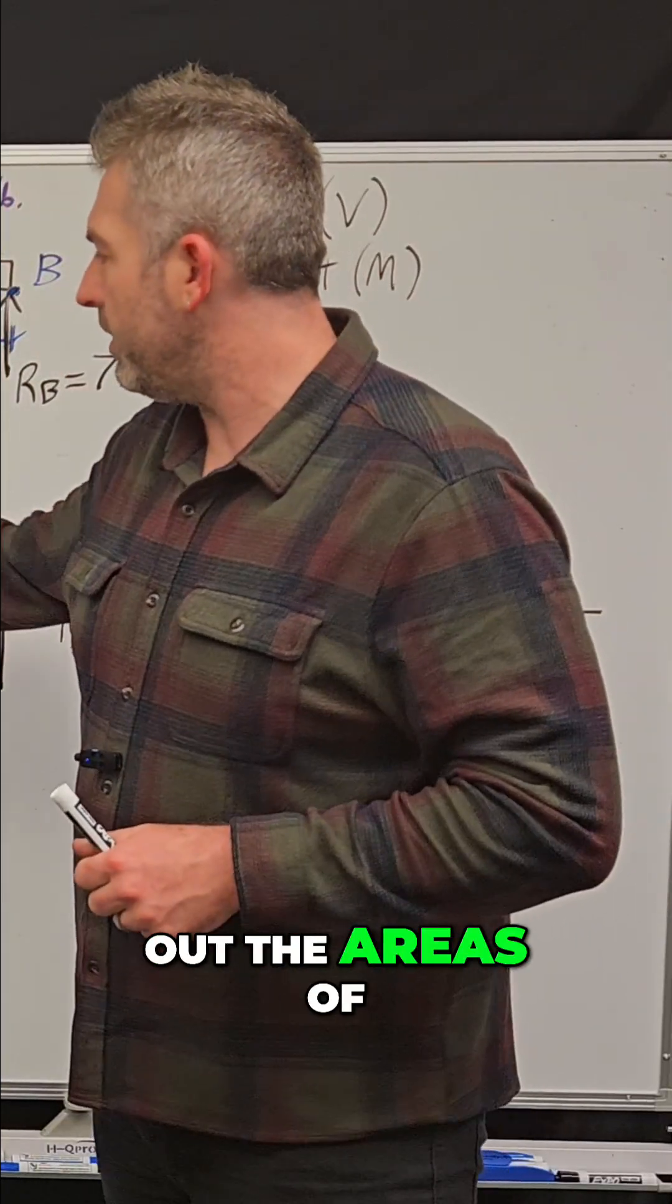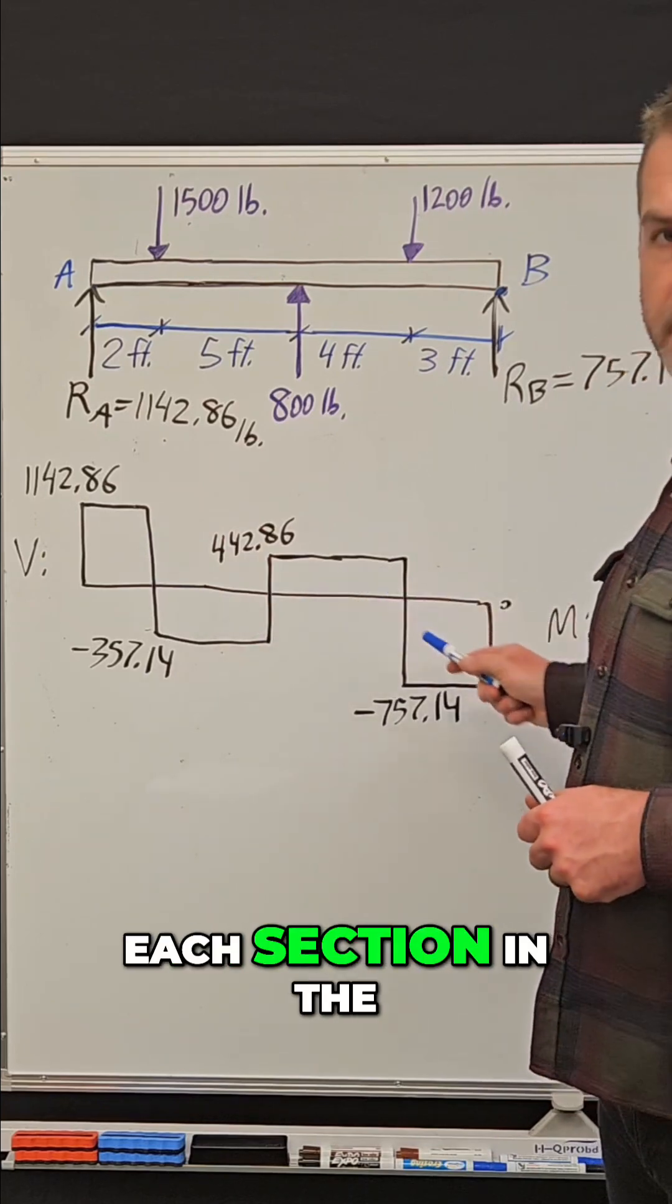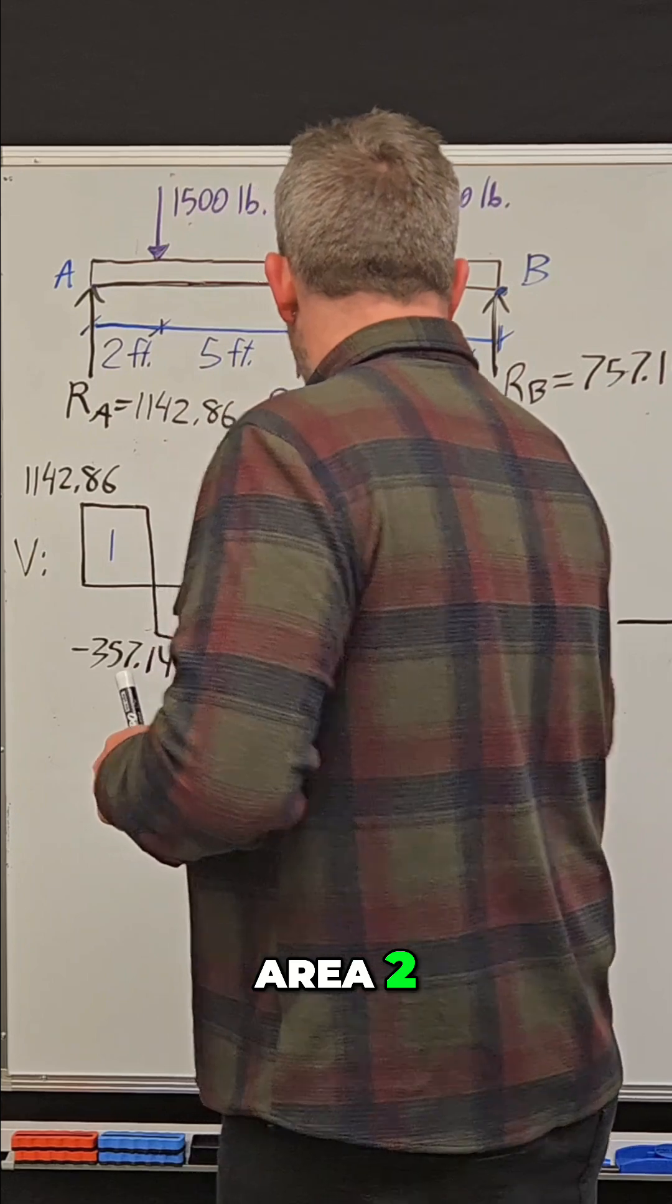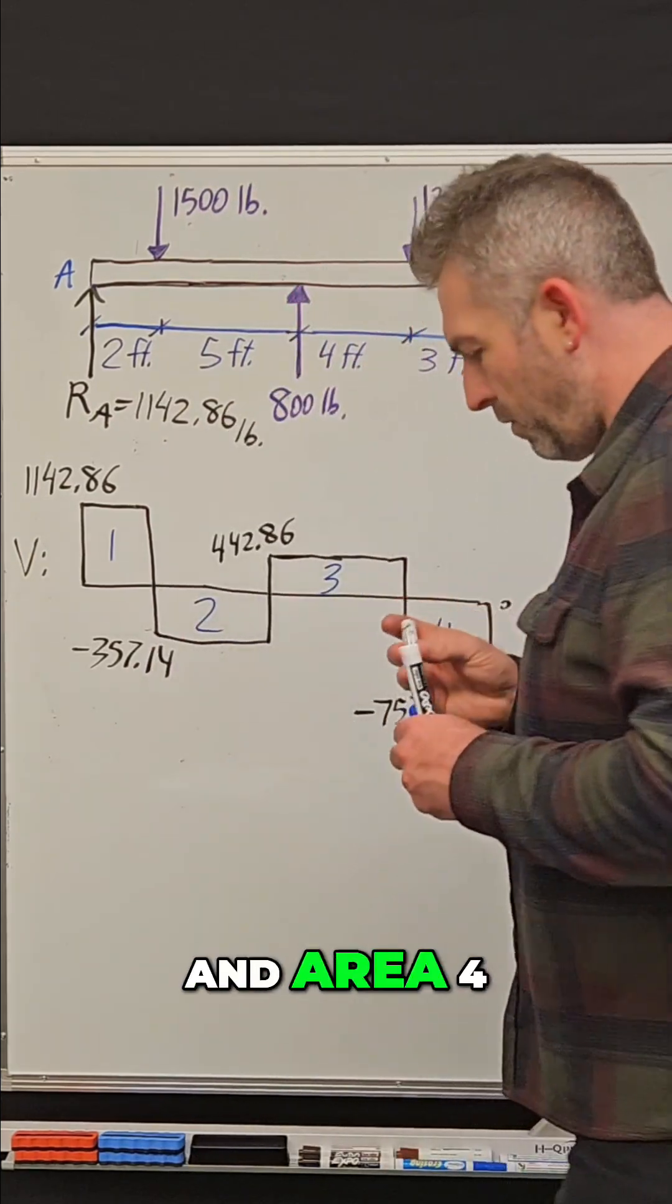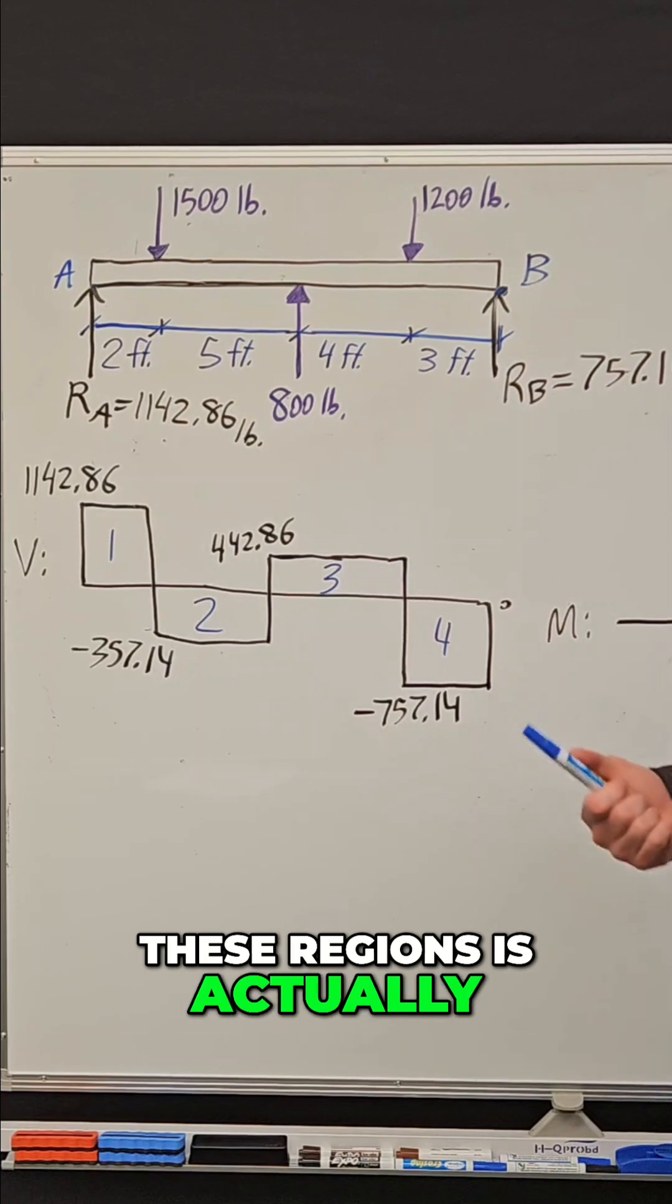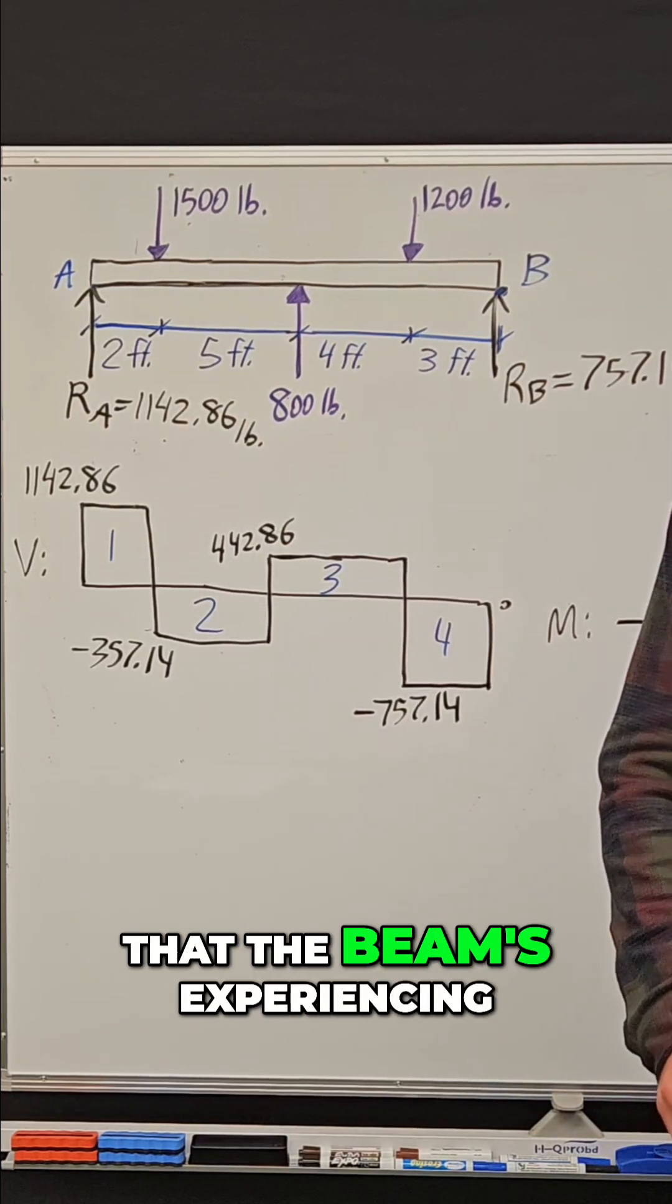We need to figure out the areas of each section in the shear diagram. So I start by labeling each area - area one, area two, area three, and area four - because the area under these regions is actually equal to the moment that the beam's experiencing.